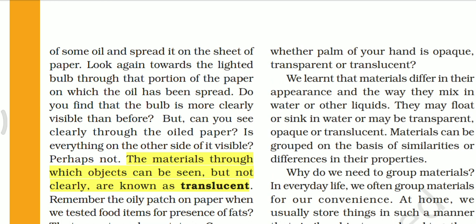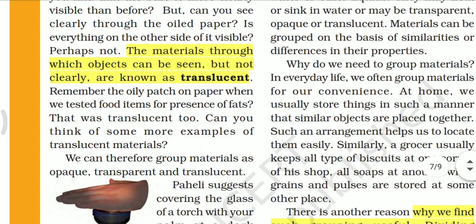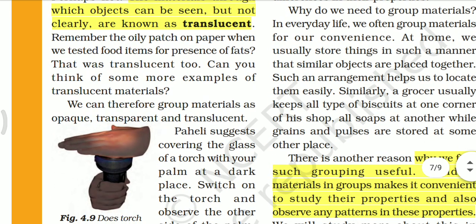Translucent objects: those materials through which objects can be seen but not clearly are known as translucent. Remember the oily patch on the paper when we tested food items for the presence of fats — we observed the patches in fat. That was translucent too.